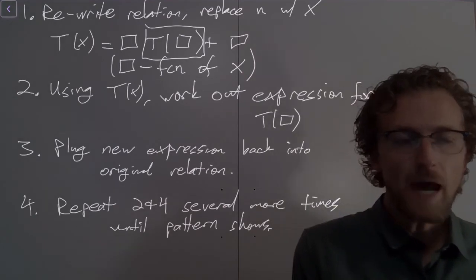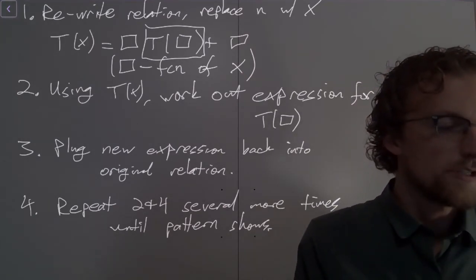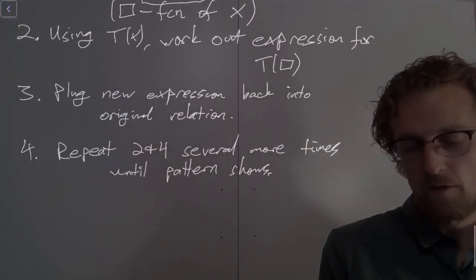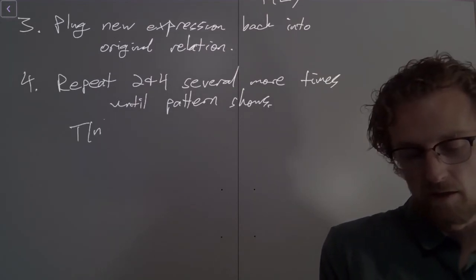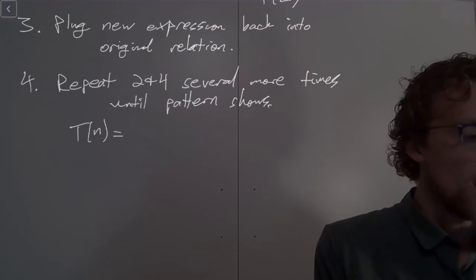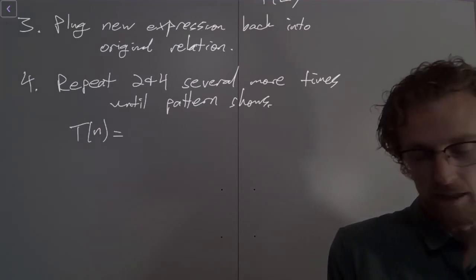All right, when you see the pattern, then we're going to stop. And so here's an example of what a pattern might look like. So I'm going to write T(n) equals some function of n and k.